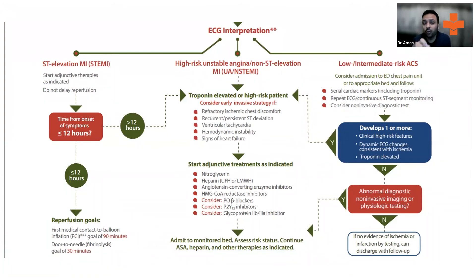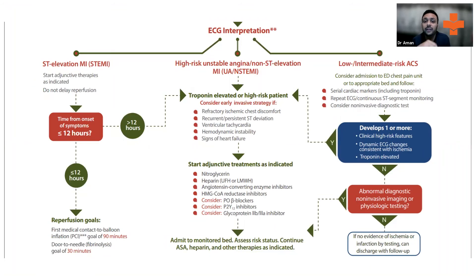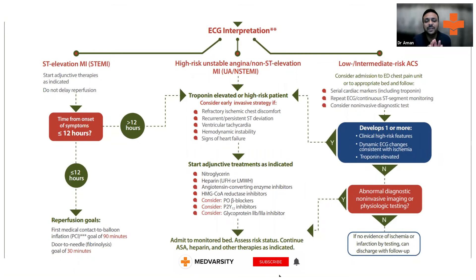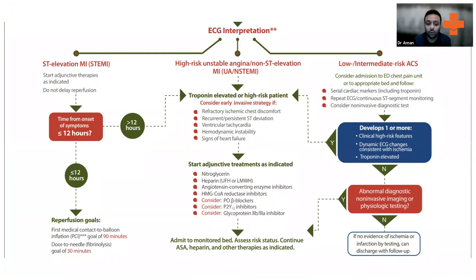For STEMI, start all adjunct therapies and minimize delay to reperfusion. Reperfusion can be achieved two ways: primary PCI, which should be performed within 90 minutes of door-to-needle time, or fibrinolysis therapy, which should be given within 30 minutes. Most of this applies to tertiary care centers. If you are not near a tertiary care center and the nearest hospital is 50 kilometers away, you must thrombolyze the patient — that is what will save the patient's myocardium. The gold standard remains PCI if the facility is available.